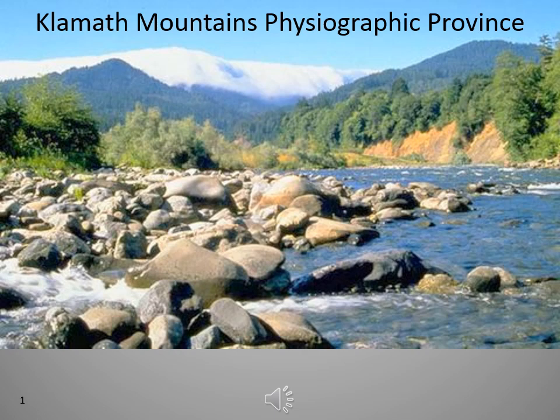Oregon's Klamath Mountains are bordered on the north by the Coast Range, on the west by the Pacific Ocean, on the east by the Cascades, and to the south by the Siskiyou Peaks, a component of the Klamath Mountains on the Oregon-California border.